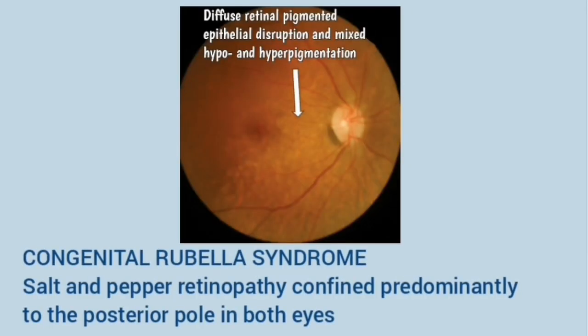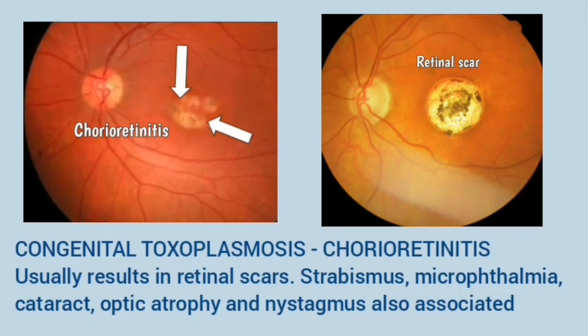This is congenital rubella syndrome, which is also known as salt and pepper retinopathy. It is confined predominantly to the posterior pole in both eyes. In the fundus image you can see diffuse retinal pigmented epithelial disruption and mixed hypo- and hyperpigmentation.